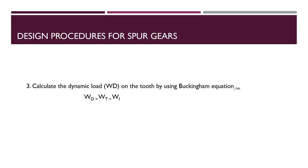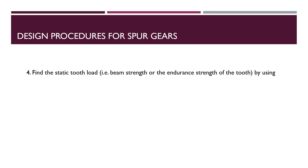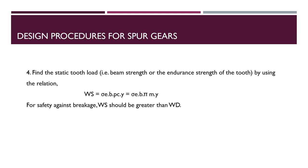Next, we calculate the dynamic load using the equation: Wd = Wt + Wi, where Wi = 21V(bC + Wt) / (21√(bC + Wt)), and Wt = P/V with P in watts and V in meters per second. Then we find the static tooth load using Ws = σe × b × π × m × Y. We must verify that Ws is greater than Wd; if not, the design is incorrect and must be redesigned.